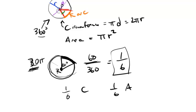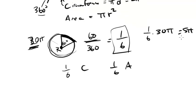What would the circumference or the length of this arc be? Well, it would just be 1 sixth of 30 pi, which is just going to be 5 pi. Let's say I pretend to know the area of this entire circle, and it was 600 pi.